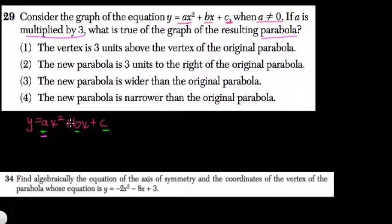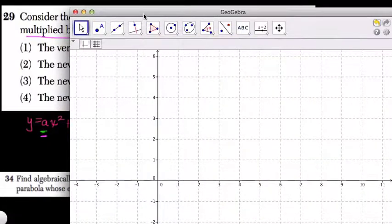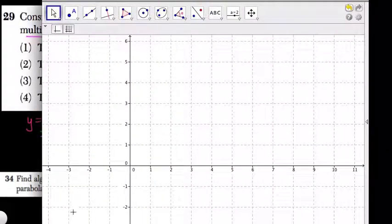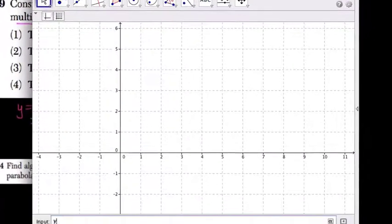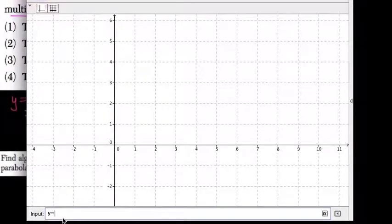Well, this is going to be a parabola, and when we multiply a by 3, we'll change the shape of the parabola. They're really asking you to think about how that multiplication changes the parabola. So if I type in y equals 1x squared, this is GeoGebra, great program, plus 1x,